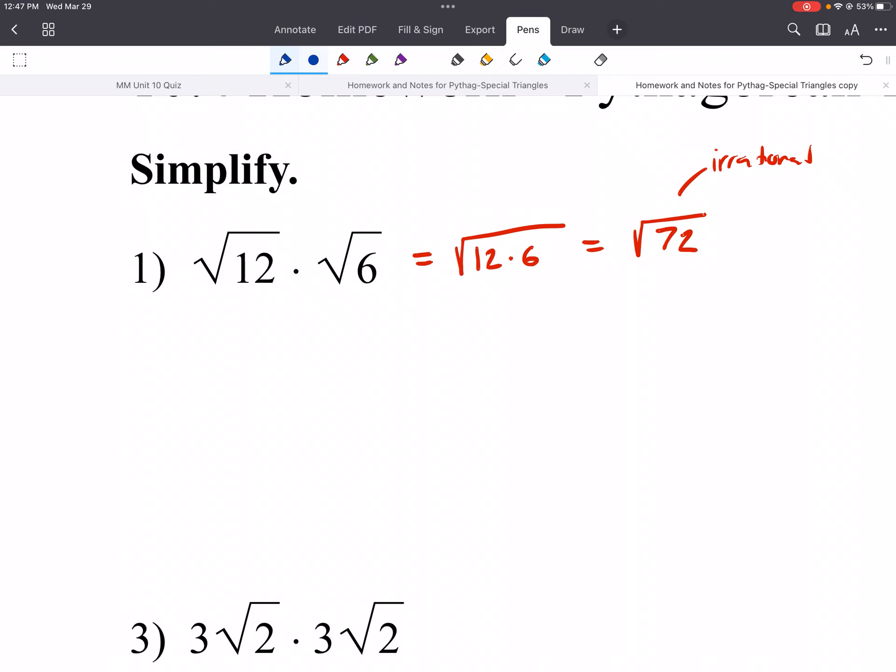And if you remember, we did this in our first term. We simplified roots. So that's where we do our factor trees. And we'd say 72 is the same as 2 times 36. And then we'd keep going on. We'd get 2 and 18, 2 and 9.